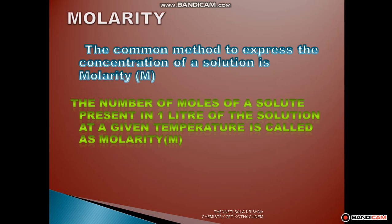A solution containing one mole of solute in one litre of the solution is called one molar solution or 1M solution. Similarly, if 0.1 moles of solute are dissolved in one litre (1000 ml) of the solution, it is called a decimolar solution or 0.1M solution. For example, 40 grams of sodium hydroxide present in one litre of the solution gives a molarity of one molar. A solution containing four grams of sodium hydroxide in one litre of the solution is called a decimolar solution, that is 0.1M.